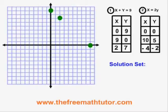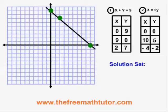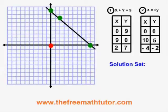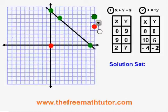Drawing a line through these points, I end up with equation 1 looking like this on the graph. For equation 2, the point (0, 0) is here at the origin. The point (10, 5) is here. And the point (negative 4, negative 2) is here.